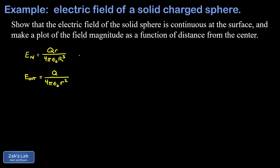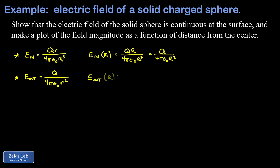We want to verify the electric field is continuous at the surface of the sphere. Evaluating E_in at r = R: Q · R / (4πε₀R³) simplifies to Q / (4πε₀R²). Evaluating E_out at r = R gives Q / (4πε₀R²) — the same result. So there is no discontinuity in the electric field as we travel from the center of the sphere outward.